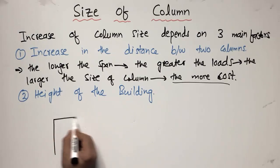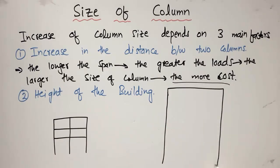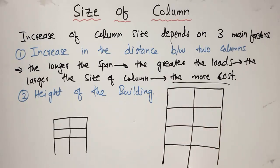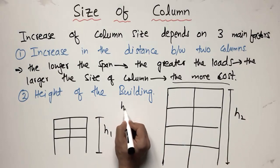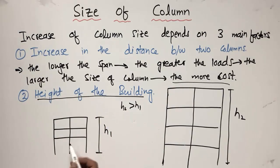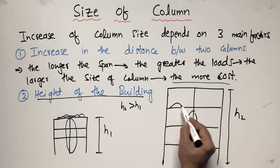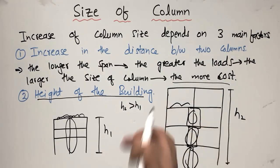Consider one building with beams and columns of height H1, and another taller building of height H2, where H2 is greater than H1. If you increase the height of the building, your column size increases proportionally. The columns in the taller building resist load from more beams and floors, so more load acts on each column. Therefore, we need to increase the size of each column. In a low-rise building, columns are not subjected to as much load as in a high-rise building.